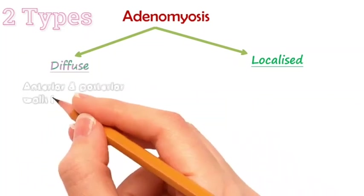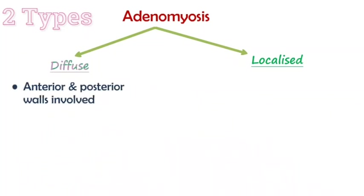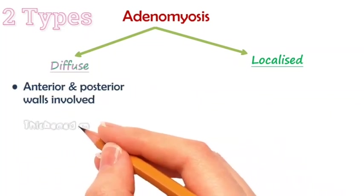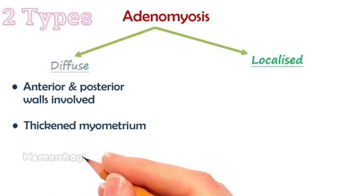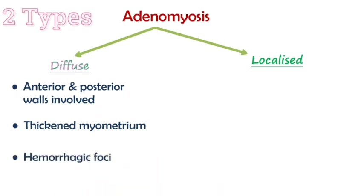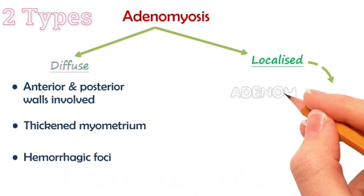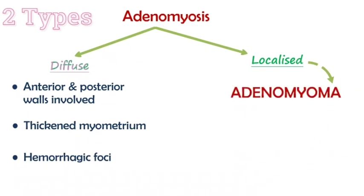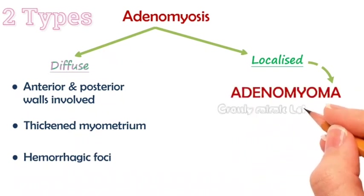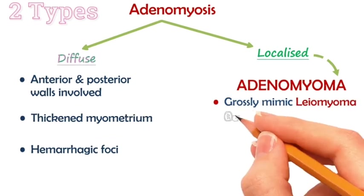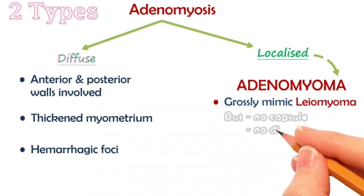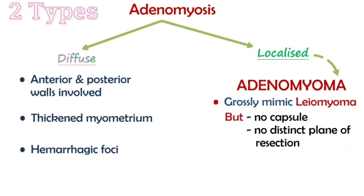In diffuse adenomyosis, both the anterior and posterior uterine walls are involved, there is thickening of the myometrium and presence of hemorrhagic foci. Localized adenomyosis is also called adenomyoma, grossly mimicking leiomyoma, but unlike leiomyoma, there is no capsule and there is no distinct plane of resection.